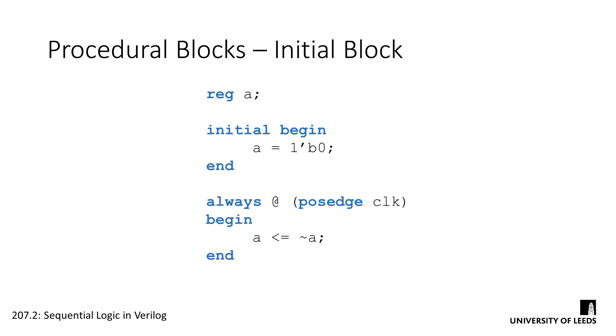This will become particularly important when using closed loops. We can do this using an initial block. Initial blocks allow us to set the state of registers at time zero of the circuit. This gives them a value for the initial state and eradicates any uncertainty.